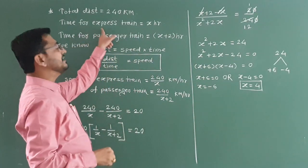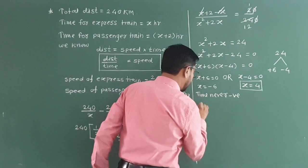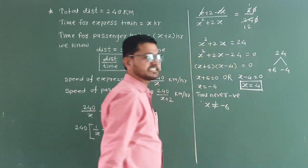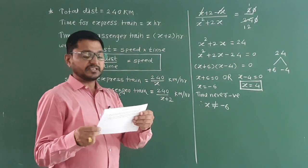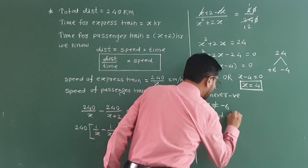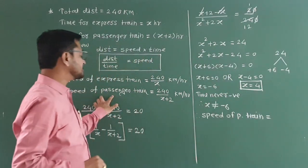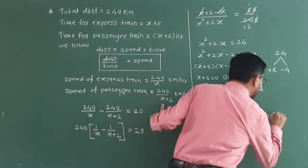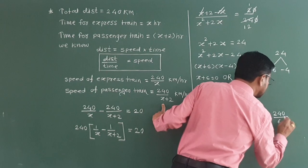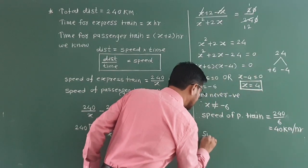Now x is nothing but time, and time is never negative. Therefore x is not equal to minus 6, and x equals 4 is our answer. The final question asks for the speed of both trains. Speed of the passenger train is 240 divided by (x plus 2), that is 240 divided by 6, which equals 40 km per hour.